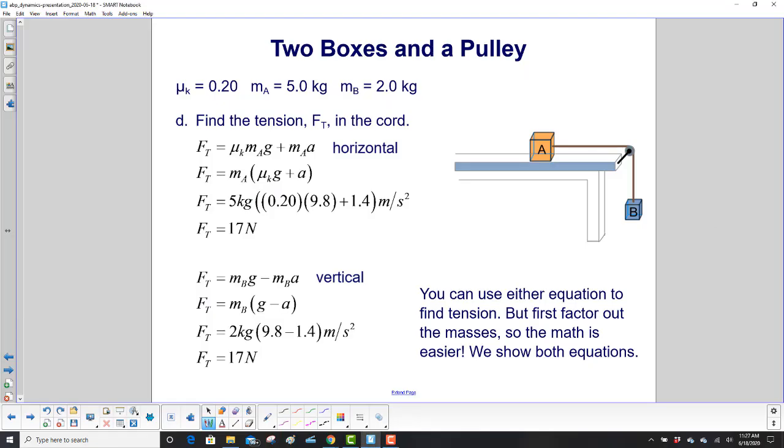Find the tension in the chord. Well, we have two ways we can do it. We can work with box A or we can work with box B. We'll do both of them. So the horizontal, which is box A, here's our equation for tension. And look, what's the first thing we do? We don't just put the numbers in. We factor out M sub A. So we say that down here. Factor out the masses so the math is easier. You plug in your numbers again and we get 17 newtons. We have kilograms, meters per second squared. That's a newton.